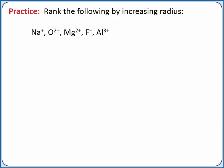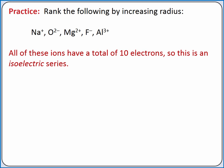We can practice by ranking ions according to increasing radius. If we look closely at this set of ions, we should notice that all of these ions have 10 electrons. A group of ions with the same number of electrons is called an isoelectric series. In an isoelectric series, the ion with the most protons is the smallest, and the ion with the least number of protons is the largest.